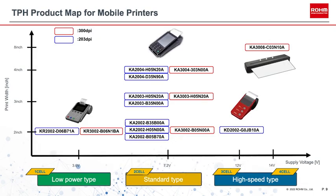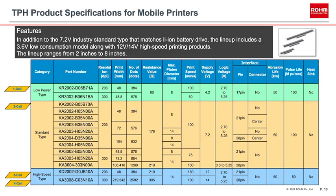Here we give a more detailed product map of thermal print heads for mobile printers. On the horizontal axis is the supply voltage, and the vertical axis is the print width. The blue and red frames around part numbers represent differences in resolution, with red indicating the highest print resolution of 300 dots per inch. One-cell thermal print heads are highlighted in green, two-cell compatible print heads in orange, and three- and four-cell high-voltage products in light blue. Specifications including resolution, print width, applicable platen size, print speed, and supply voltage are listed for each product.